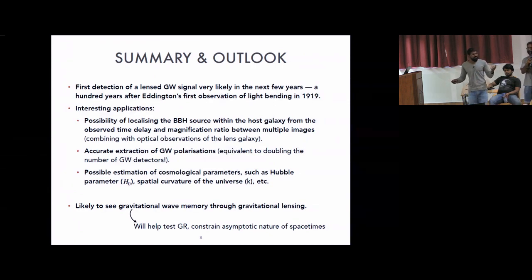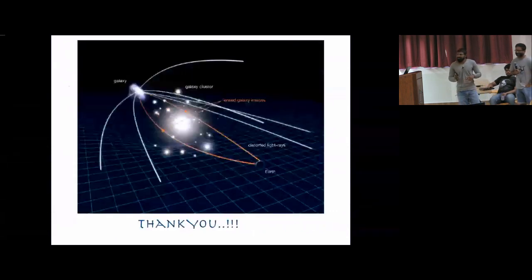Another thing I find interesting—you can also use gravitational lensing to detect gravitational memory. Right now the amplitude of them is very small, but through lensing, in cosmological lensing, this can get enhanced and we can have sufficient magnitude. In gravitational memory terms, it might become detectable. If this is available, this will help test GR, constant asymptote nature of spacetime, etc.